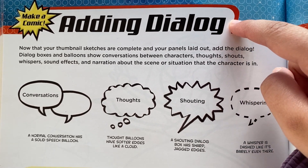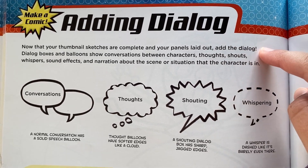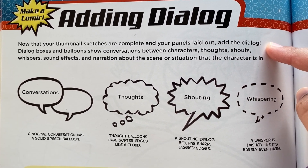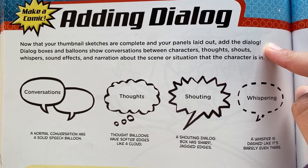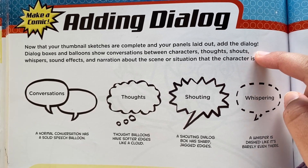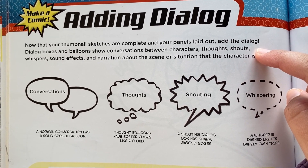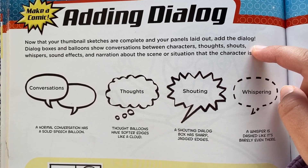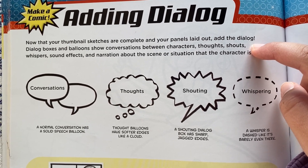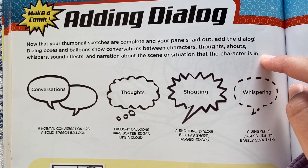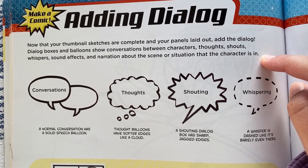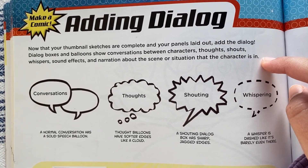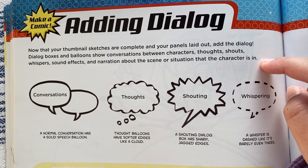Adding dialogue. Now that your thumbnail sketches are complete and your panels are laid out, add the dialogue. Dialogue boxes and balloons show conversations between characters, thoughts, shouts, whispers, sound effects, and narration about the scene or situation that the character is in.